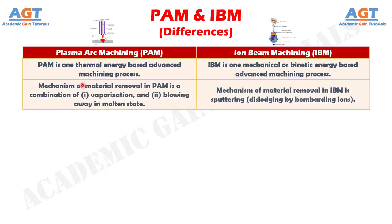Number 2: the mechanism of material removal in plasma arc machining is a combination of vaporization and blowing away in molten state, whereas the mechanism of material removal in iron beam machining is sputtering — dislodging by bombarding ions.